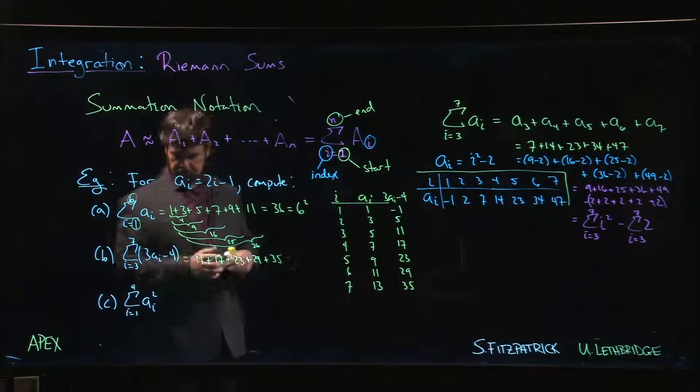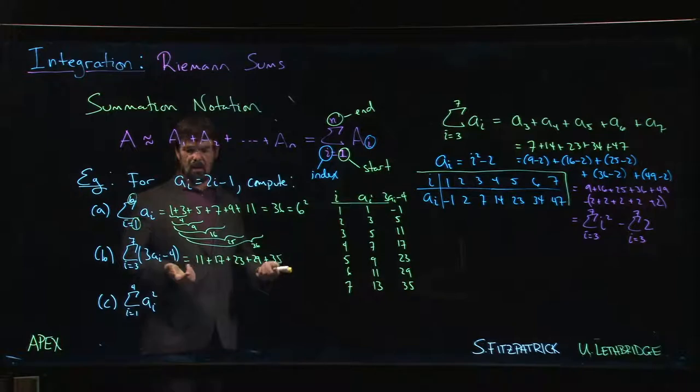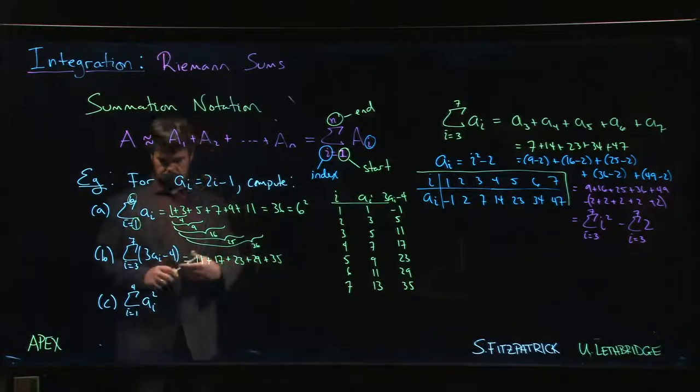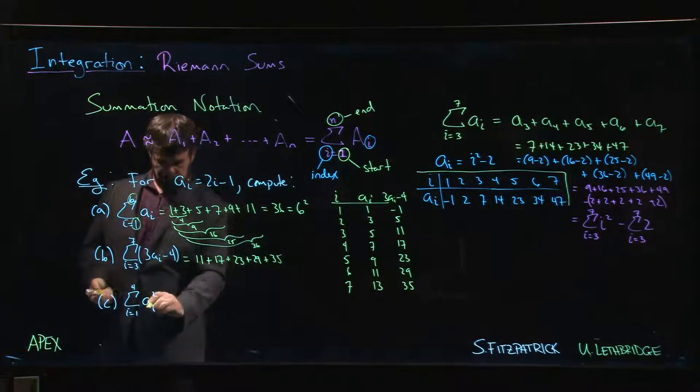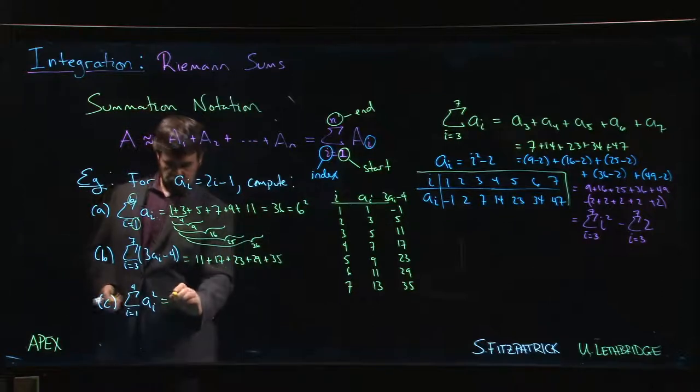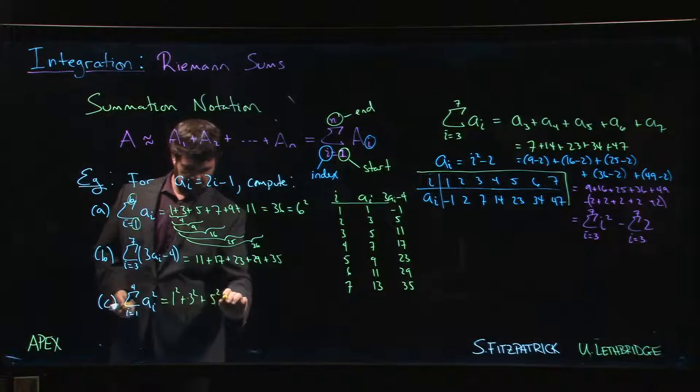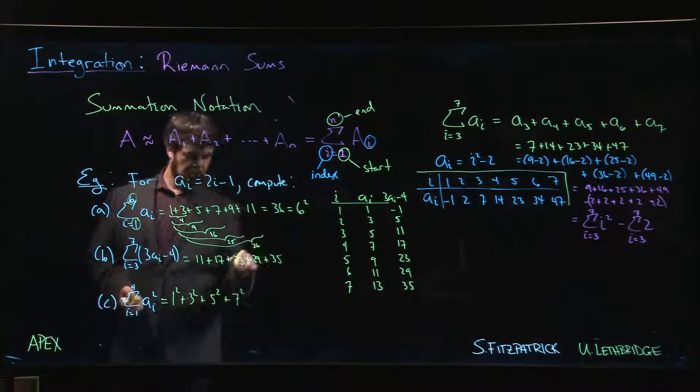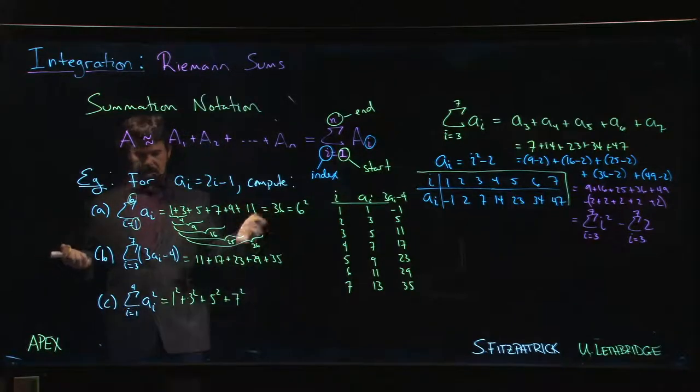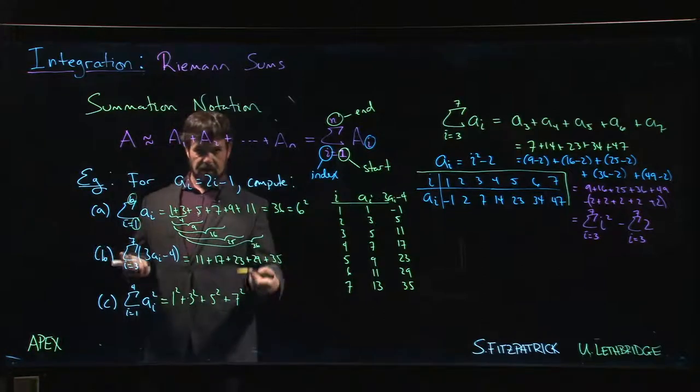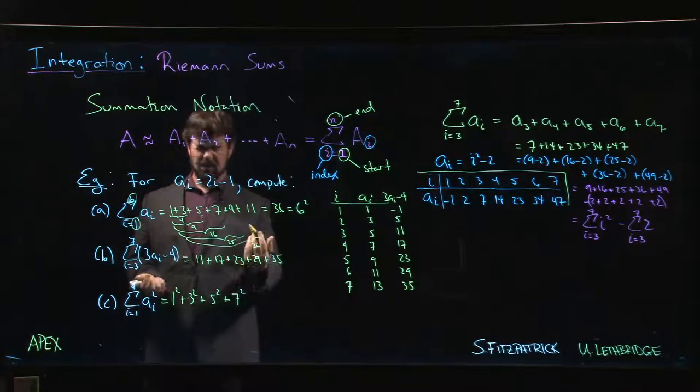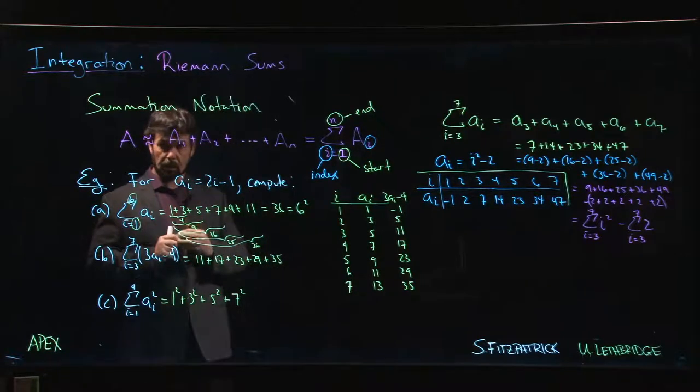Okay, last example. We're summing squares, so we're gonna do one squared plus three squared plus five squared plus seven squared. That's all it's asking us to do. Again, we can work out those values, we can compute the squares, add them up, but let's leave it at that for now and move on, look at properties.